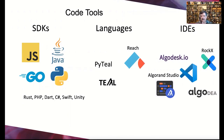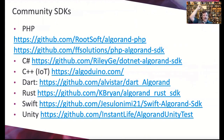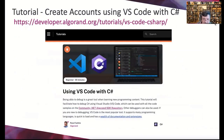AlgoDEA is the one you want to download first — it's an IntelliJ plugin and it's incredible. There's also Rock-X for testing and AlgoDesk.io. Community SDKs include PHP and C#. For mobile: up until recently the Xamarin SDK was the only cross-platform solution for Algorand, but this past week a Swift SDK was announced for iOS native development, and there's now an Algorand Unity GitHub for game developers.